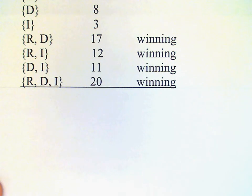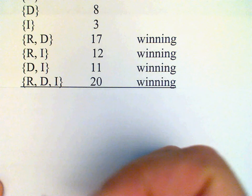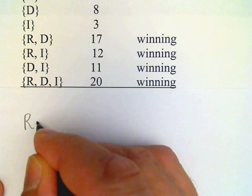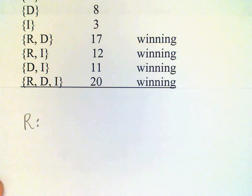We have four winning coalitions—that's all we really need to look at. We don't need to bother with the non-winning coalitions. For each voter, we count up the number of times that voter is critical. For R, let's see: R is critical in this coalition and in this coalition, so that's twice.